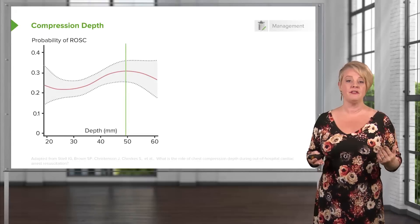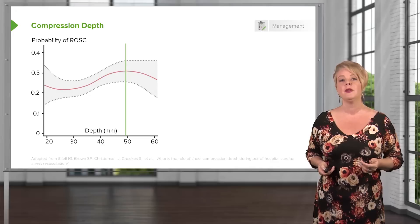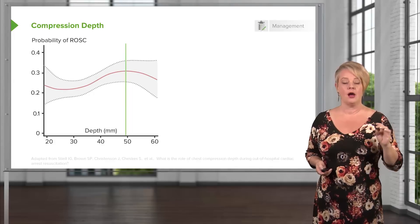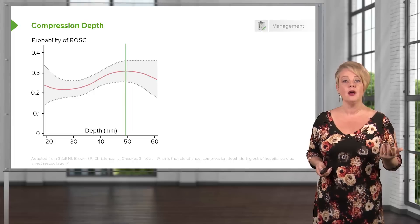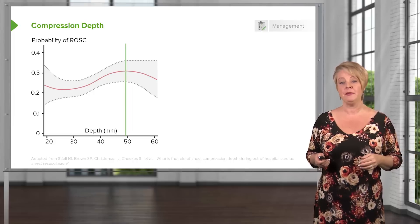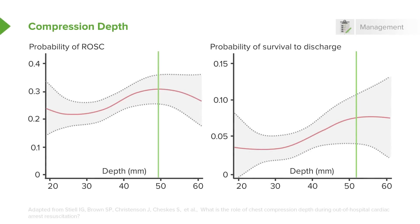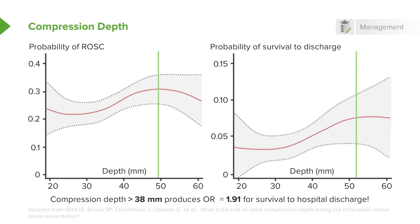For compression depth, a similar study looked at depth as an isolated variable. For patients achieving return of spontaneous circulation, the optimal compression depth was just under 5 centimeters; for survival to hospital discharge, it was just over 5 centimeters. In general, any compression depth over about 4 centimeters or 38 millimeters produced an odds ratio of 1.91 for survival to hospital discharge — meaning compressions greater than 38 millimeters make you roughly twice as likely to survive.